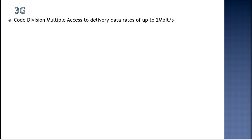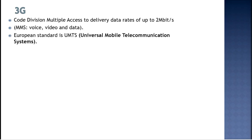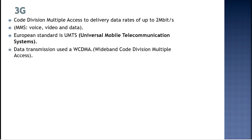3G mobiles were first introduced in 2003. This generation merges different technologies and uses high-frequency bands for transmission. CDMA — Code Division Multiple Access — can deliver data up to 2 megabits per second. 3G mobiles introduced MMS — Multimedia Messaging Service — allowing you to send audio and video. The European standard used the term UMTS — Universal Mobile Telecommunication System.